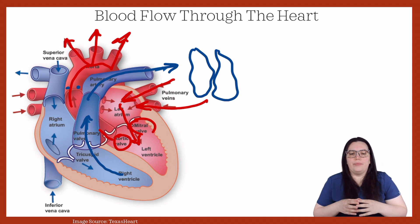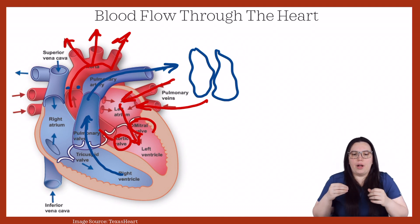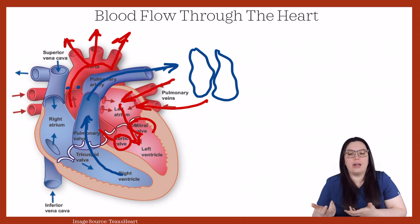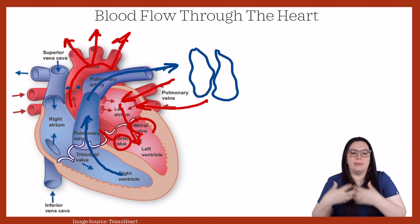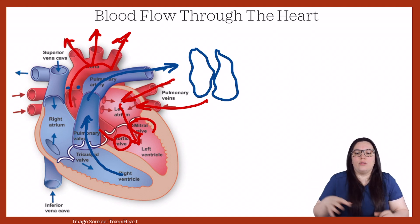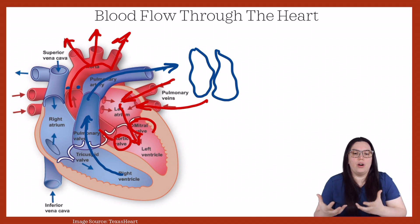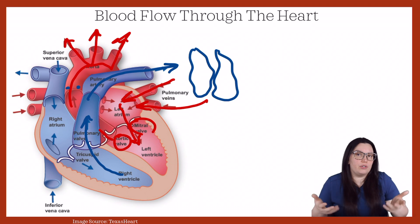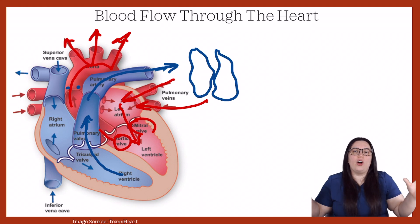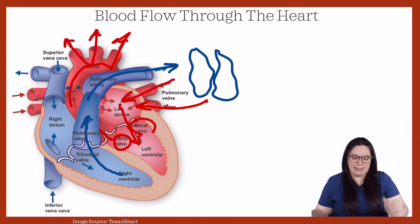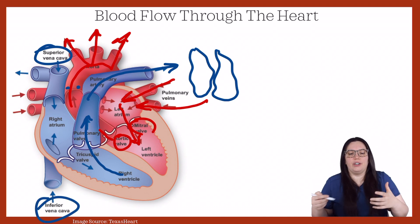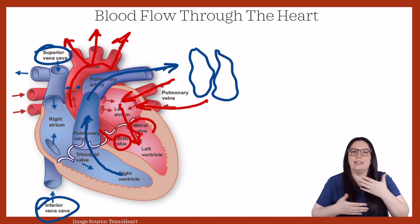From there, blood flows into small vessels through the body called arterioles and into capillary beds — that's where the magic happens. Capillary beds exchange nutrients: oxygen and nutrients get dropped off, and byproducts such as carbon dioxide and waste products are picked up. Then that deoxygenated blood circulates back through venules — tiny vessels — back to the veins. All of those veins ultimately connect back to the superior and inferior vena cava, and the whole process starts all over again.